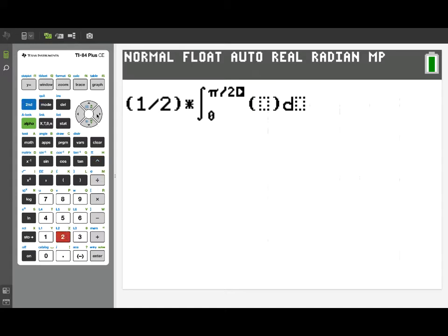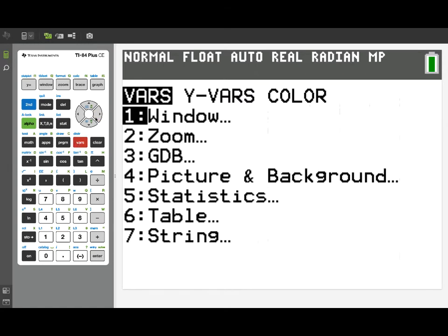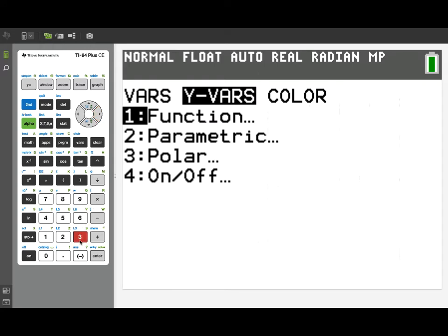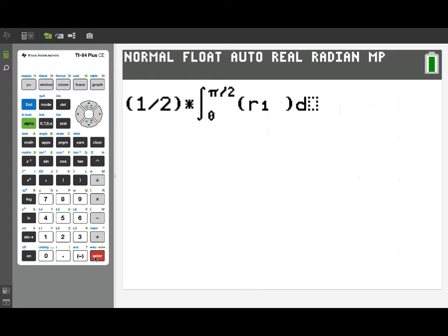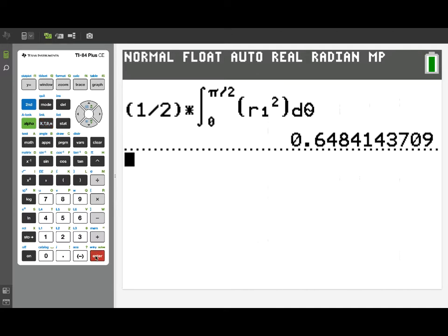So now we've got our integral running from 0 to pi over 2. And our integrand, again, will be the square of the appropriate polar curve. In this case, we'll go to the Y variables menu and go to polar to pick up R1. We'll square that function value. And then finally, we'll need to indicate the variable of integration, which in this case is theta. We'll hit enter, and we'll find the desired value of that area, which is given as 0.648.